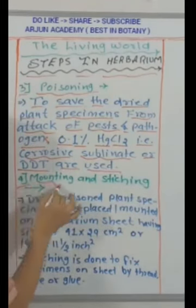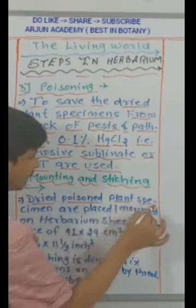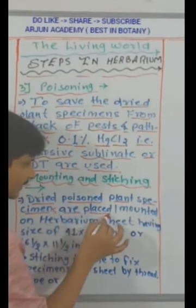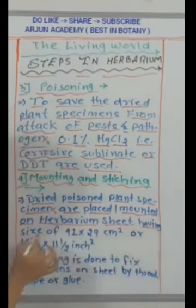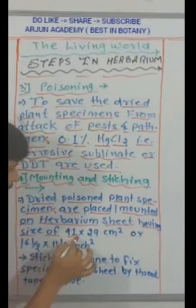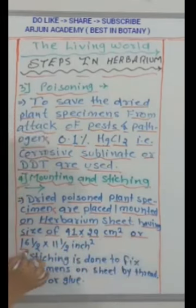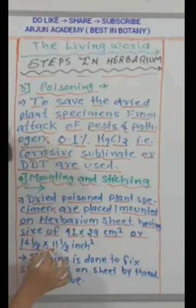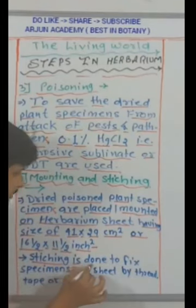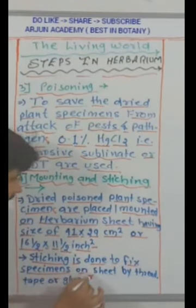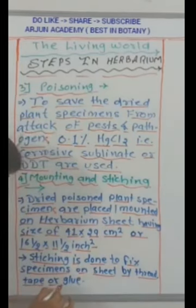Number 4: Mounting and stitching. Dried and poisoned plant specimens are placed or mounted on herbarium sheets having a size of 41 × 29 cm (or 16.5 × 11.5 inches). Stitching is done to fix specimens on the sheet by thread, tape, or glue.